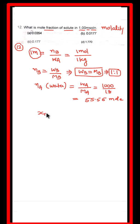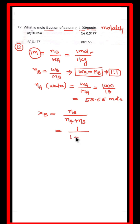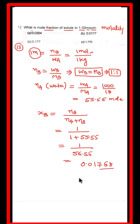Now mole fraction of solute equals number of moles of solute divided by total number of moles of solution. Moles of solute = 1, moles of water = 55.55, so mole fraction = 1 divided by (1 + 55.55) = 1 divided by 56.55 = 0.0177. The answer is 0.0177, option C.